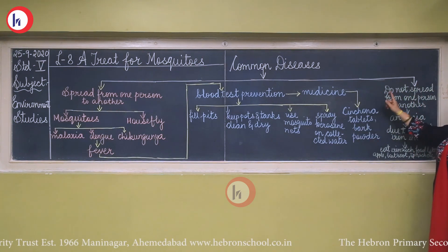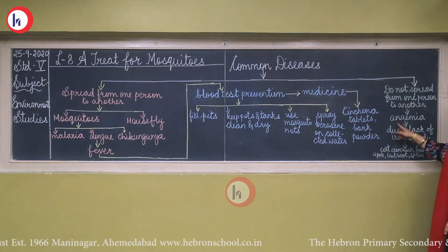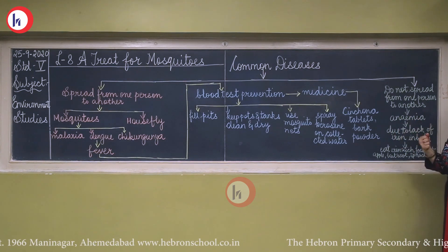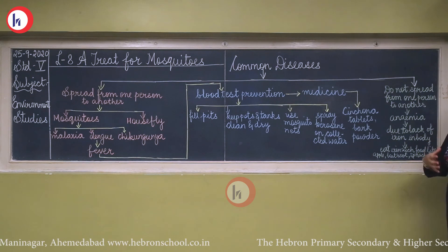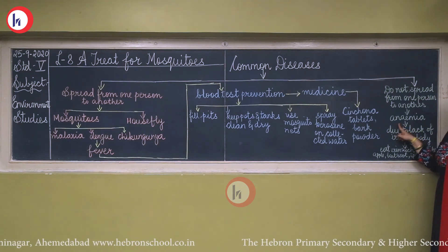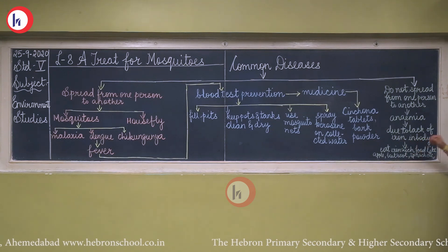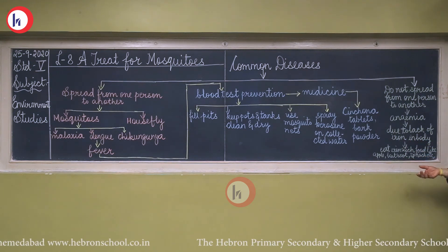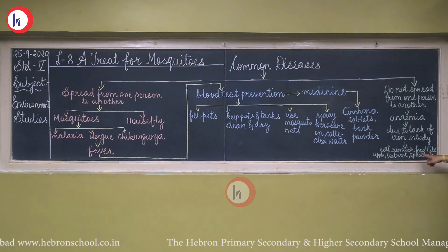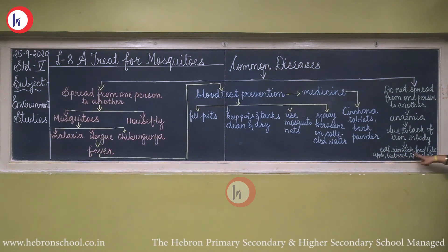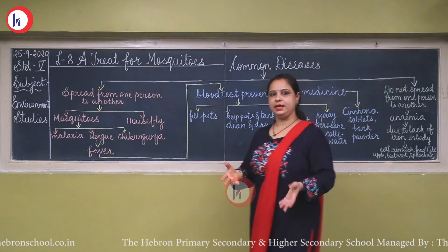The second category of diseases — those which do not spread from one person to another — is anemia. When there is less hemoglobin or iron in your body, you will have anemia due to lack of iron. For that, you should eat iron-rich food like apple, beetroot, spinach, and methi.